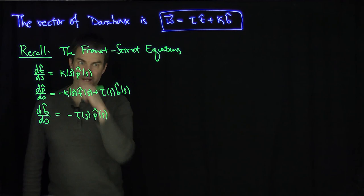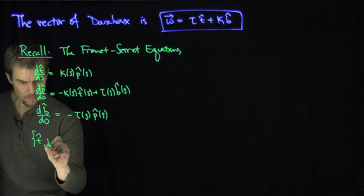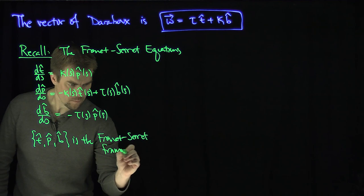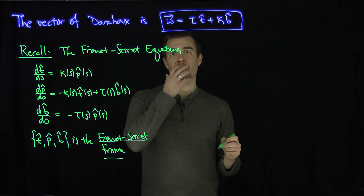Where t, p, and b is the Frenet-Serret frame. Now let's look at what this Darboux vector crossed with t̂ is.